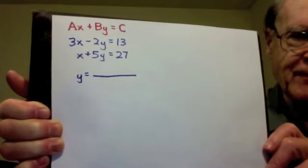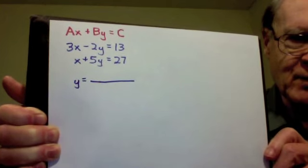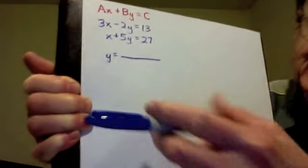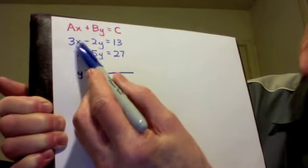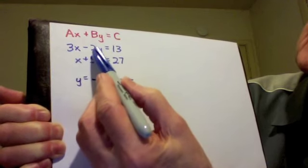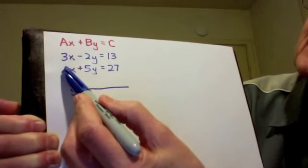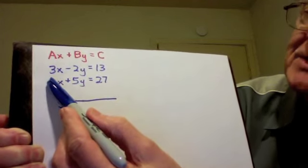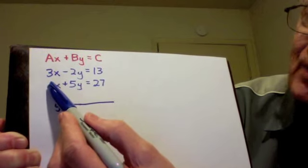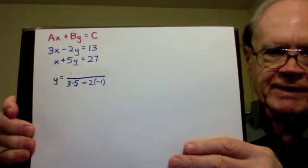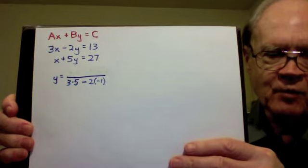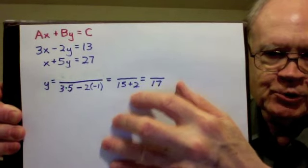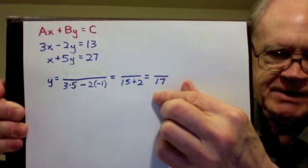I'm going to solve for y first, and y will be written as a fraction. The denominator of the fraction will be 3 times 5 minus negative 2 times 1. That's this diagonal multiplied minus this diagonal multiplied, using those coefficients. So here's the denominator, 3 times 5 minus negative 2 times 1. We have a double negative here, that's 15 plus 2, which is 17. So that's the denominator.